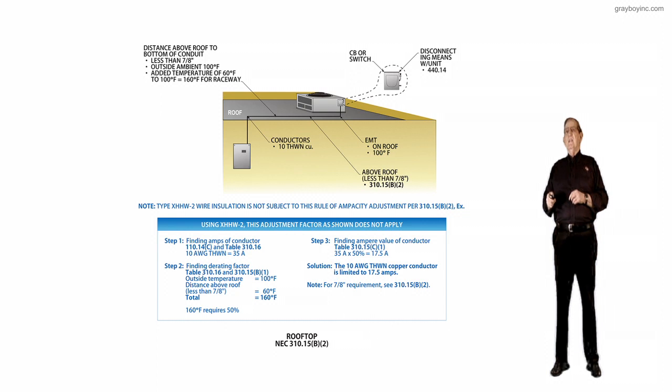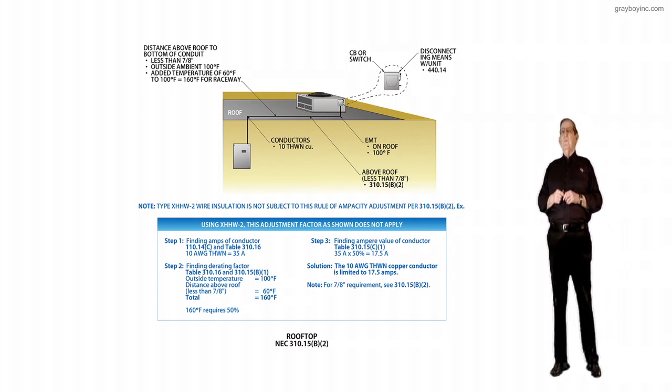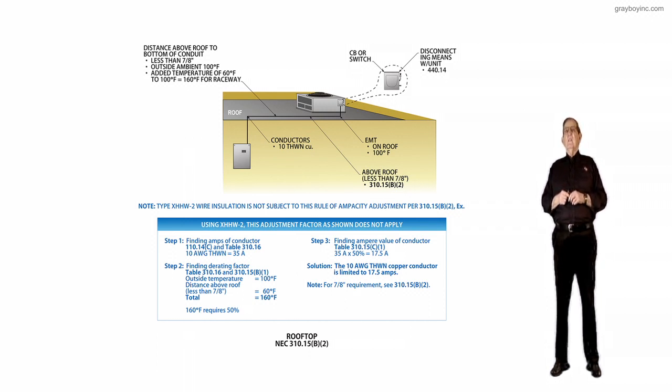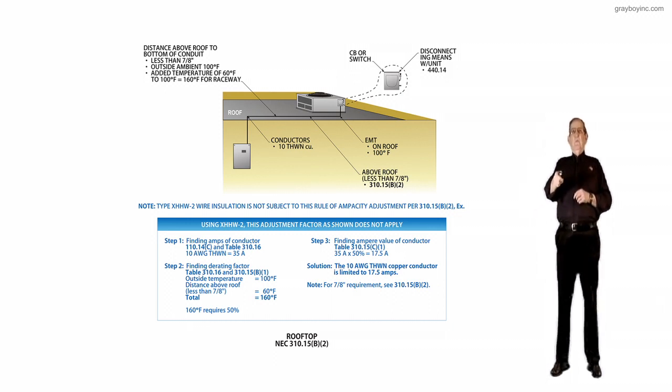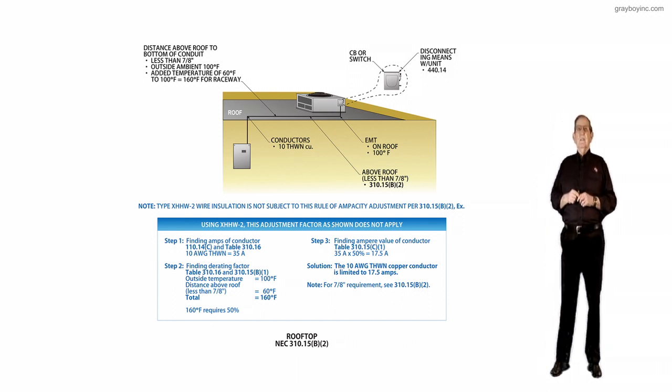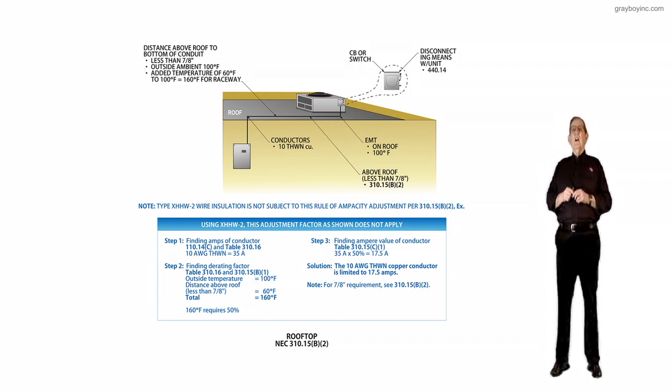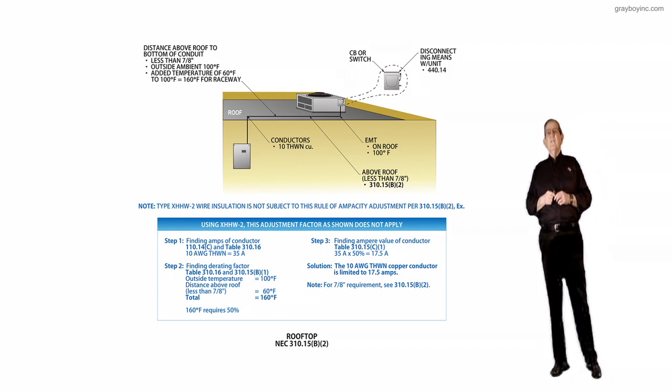Secondly, above the roof, if you're less than 7 eighths of an inch by this new code in 310.15B2, you're in the derating that you see in the calculation of the boxed-in information. If we look at the conduit and the top call-out, it says distance above roof to the bottom of the conduit is less than 7 eighths of an inch. The outside ambient temperature is 100 degrees Fahrenheit, and if that is the case, you've got to add on 60 degrees Fahrenheit. So you'd add that to 100 degrees Fahrenheit, you'd come up with 160 degrees Fahrenheit.